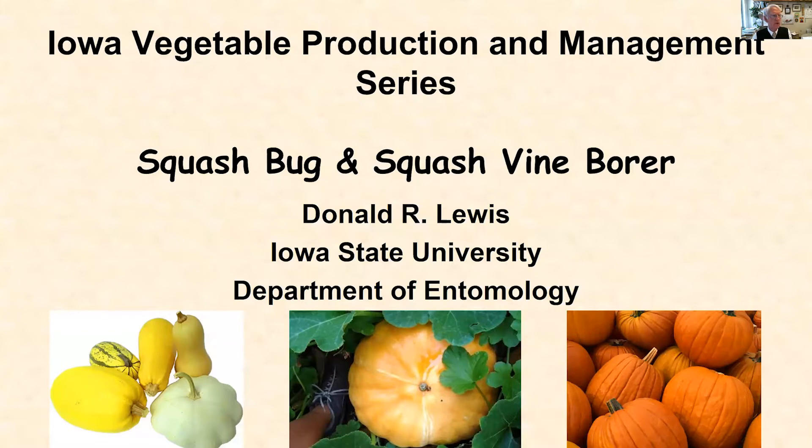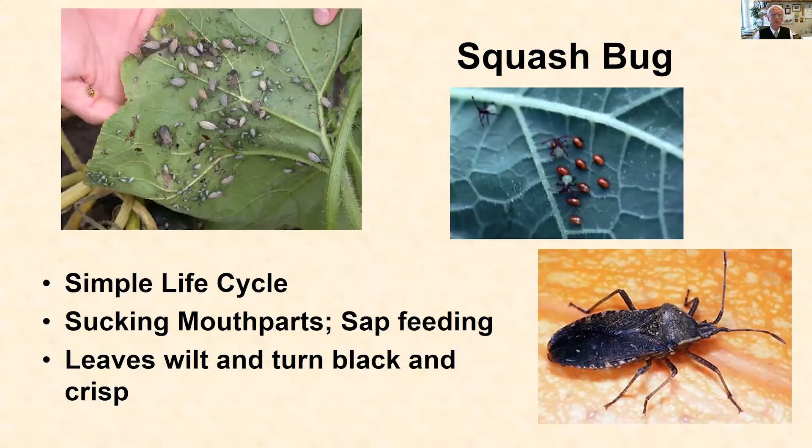Hello. In this particular episode of the Iowa Vegetable Production and Management Series, I'll be talking about a pair of insect pests: the squash bug and the squash vine borer. They're not related; there's nothing similar about them other than they both happen to attack the same group of plants in the squash group. The squash vine borer and squash bug are common pests, well known to most people. You've probably seen these before, and we'll quickly review what we need to know about them.